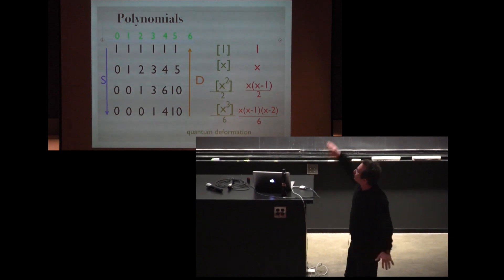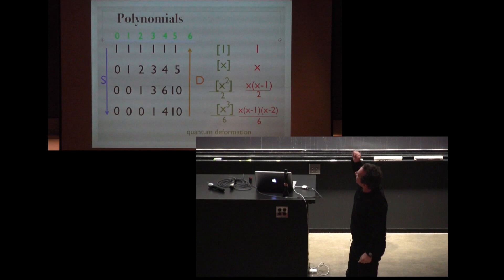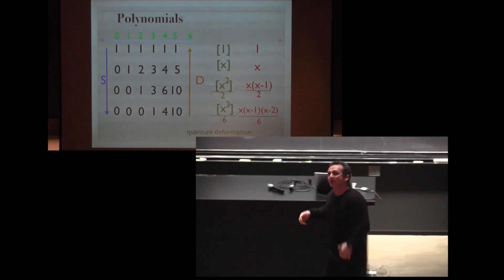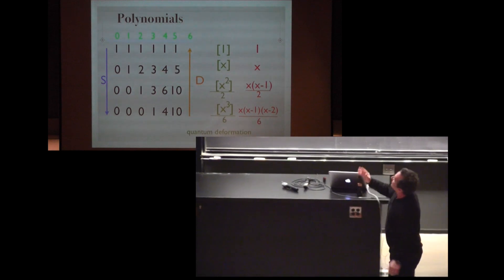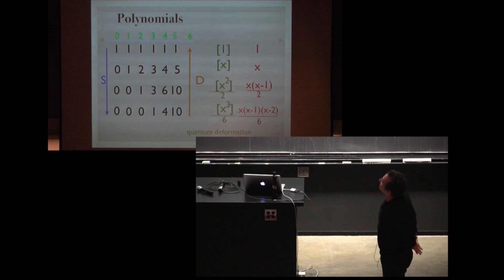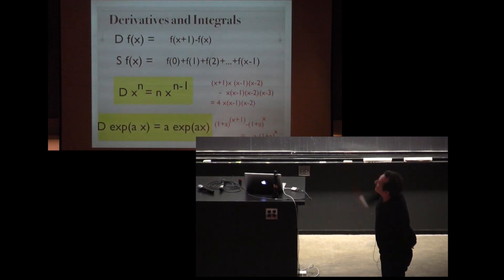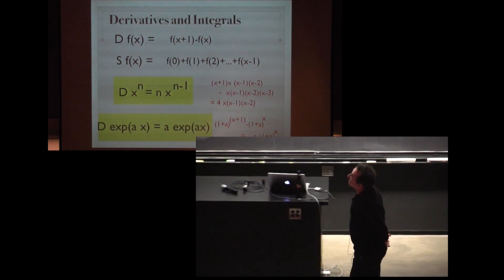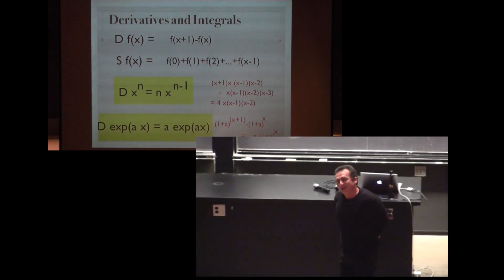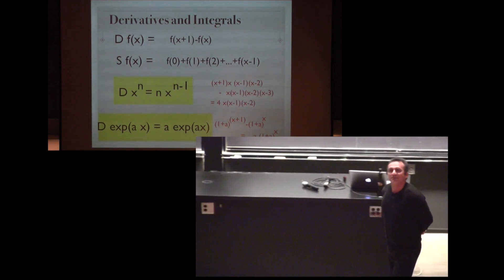Let's boldly call these rows functions, like 1, x, x squared over 2 factorial, x to the 3 over 3 factorial, et cetera. We have a summation which goes down and a differentiation which goes up. This is a quantum deformation of the algebra we know, but it's done in such a way such that the derivative of x to the n is n times x to the n minus 1. The formula we know.